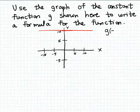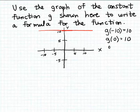For instance, g of minus ten is going to give us an output of ten, or g of zero will also give us an output of ten, or g of five will also give us an output of ten. So no matter what input we use, the matching output is always the same — it's ten.